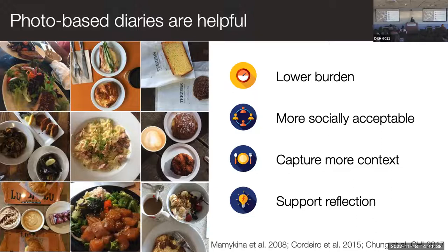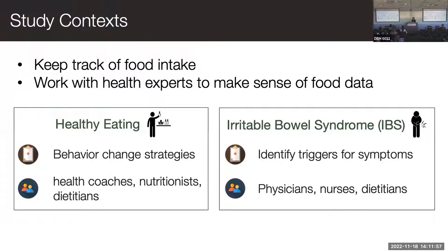At the time we did this study, there were photo-based systems for personal use, but we didn't know if they worked in contexts requiring expert review. We looked at two populations: people with healthy eating goals working with health coaches, nutritionists, and dietitians; and people with chronic conditions like irritable bowel syndrome who needed to identify food triggers, working with physicians, nurses, and dietitians on the more clinical side.